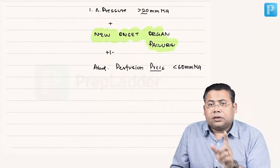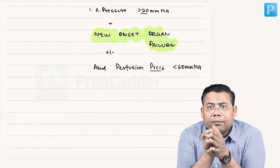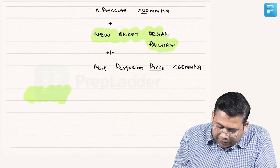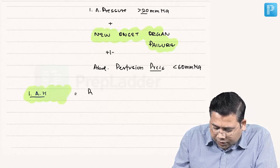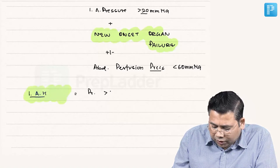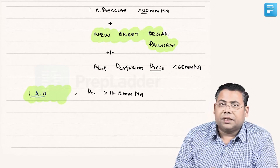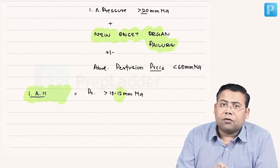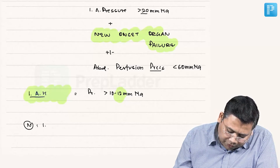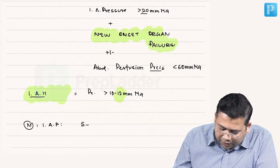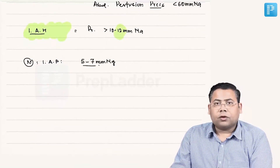If organ failure is not present, that condition is considered intra-abdominal hypertension. The criteria for intra-abdominal hypertension is abdominal pressure more than 10 to 12 mmHg — with 12 mmHg being the cutoff. The normal intra-abdominal pressure is 5 to 7 mmHg.